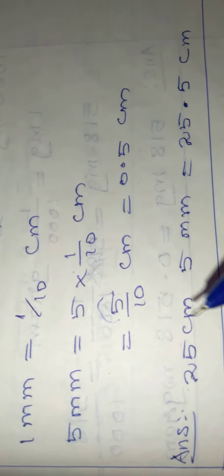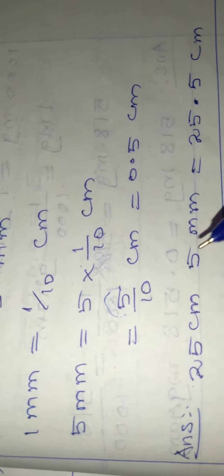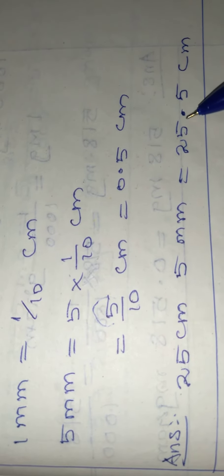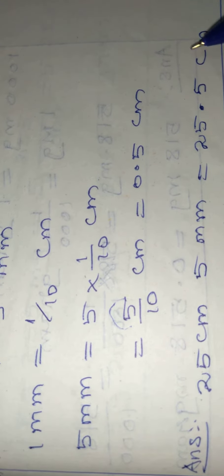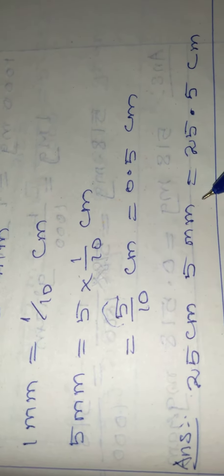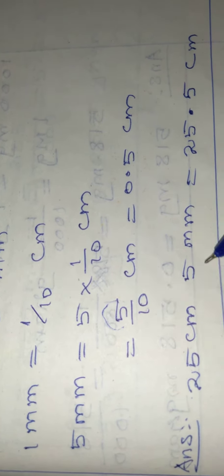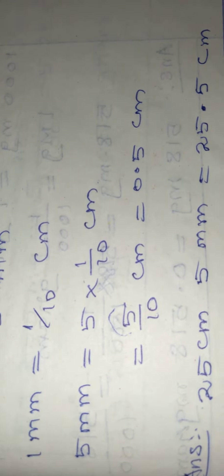The question is 25 centimeter 5 millimeter. 25 centimeter we can write as it is, and 5 millimeter we can write as 0.5 centimeter. So the final answer is 25.5 centimeter. Thank you.